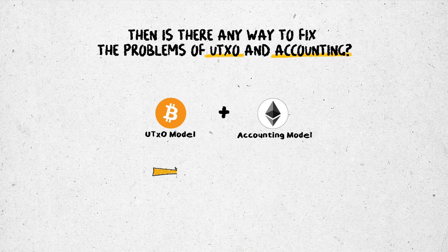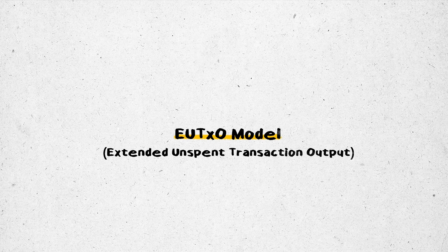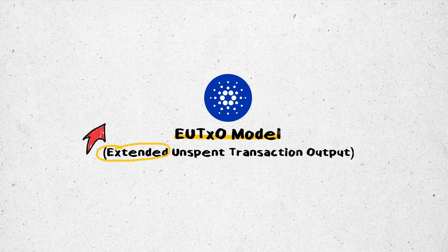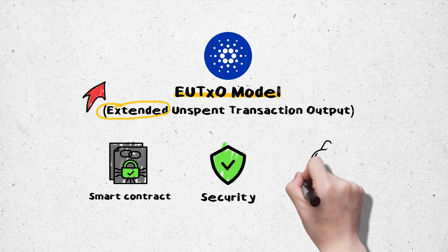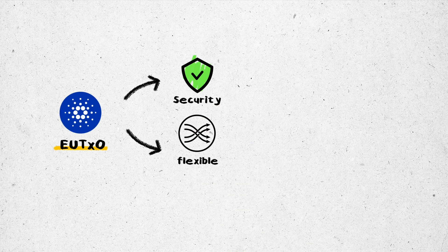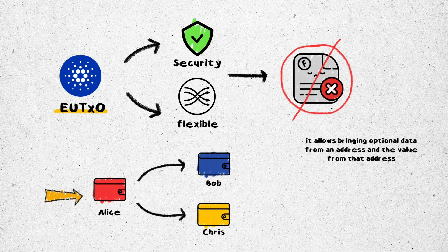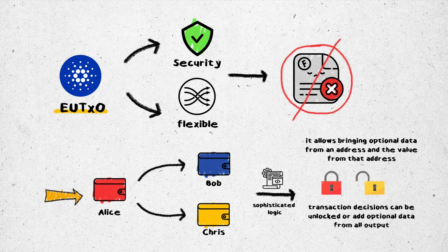So is there any way to fix the problems of UTXO and accounting? By collaborating the strengths and modifying the weaknesses of both models, the EUTXO model was created. The EUTXO — Extended Unspent Transaction Output — is used by Cardano to solve both problems. Extended here means extension: to combine the best factors of both ledger mechanisms, including smart contract deployment and confidential determinism. EUTXO allows bringing optional data from an address and a value from that address, and allows the output address to contain sophisticated logic so that transaction decisions can be unlocked or added with optional data.